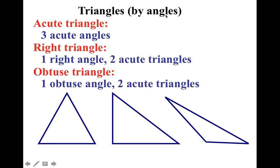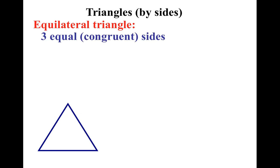What other way could you classify triangles? You guessed it, by sides. So there's three ways to be able to do this also. There's the equilateral triangle. Now, an equilateral triangle has three congruent or equal sides.